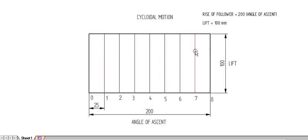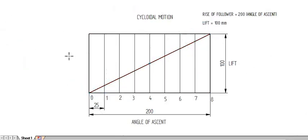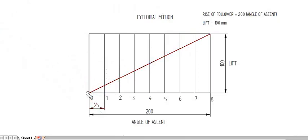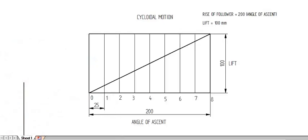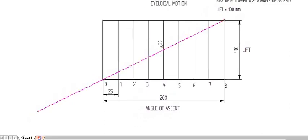For drawing cycloidal motion, we have to construct a circle on the diagonal of this diagram. I am first drawing a diagonal — this is for the rise. We have to draw the diagonal from the lower portion to the higher portion. I am extending and marking this line as a dotted line.